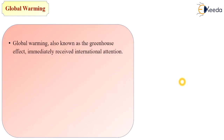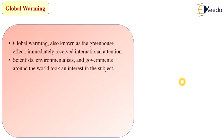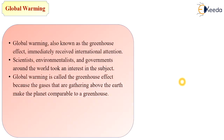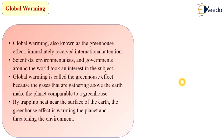Global warming is also known as the greenhouse effect because the main cause of global warming is the rise in temperature due to greenhouse gases. These gases gather above the earth and make the planet comparable to a greenhouse, trapping heat near the surface of the earth, thereby warming the planet and threatening the environment.